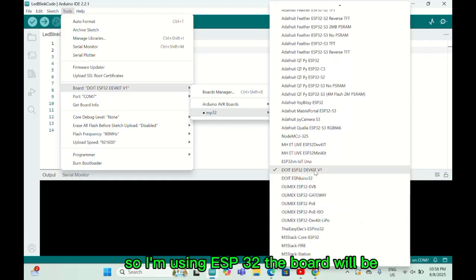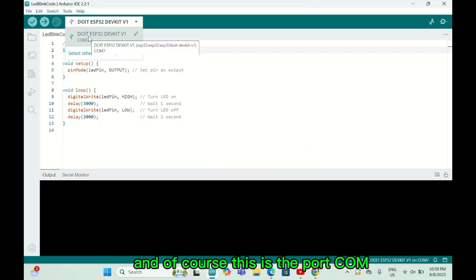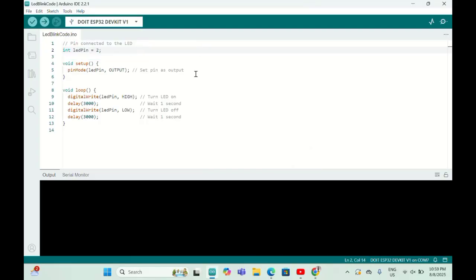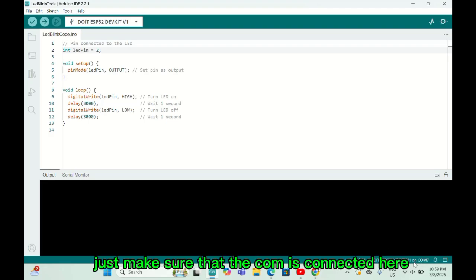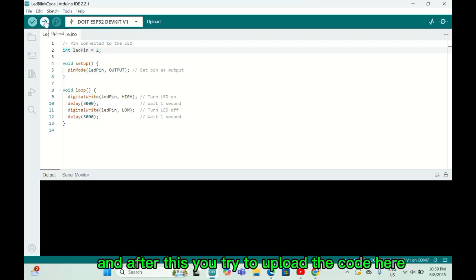I'm using ESP32 dev kit v1. You need to check on the back of the board. Click that, and of course this is the port. After you set the port, make sure that there is a port on COM7 - maybe yours will be COM3, COM2, COM5, COM6, any COM. Just make sure that the COM is connected here. After this, you try to upload the code. When you upload the code you must press the boot button on ESP32.